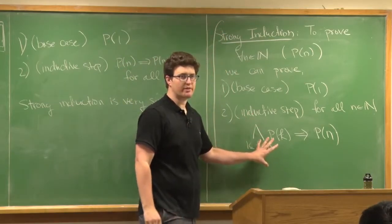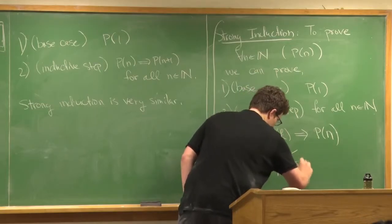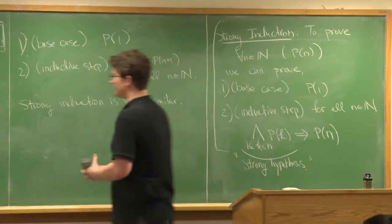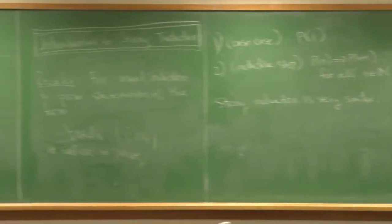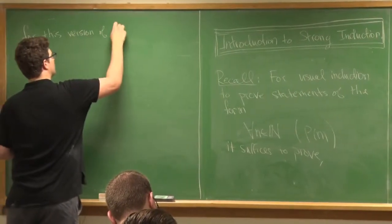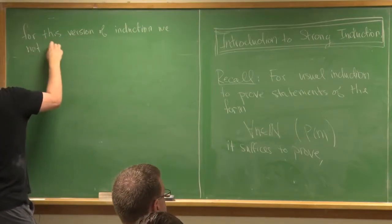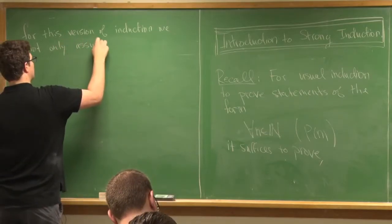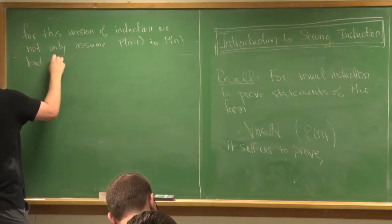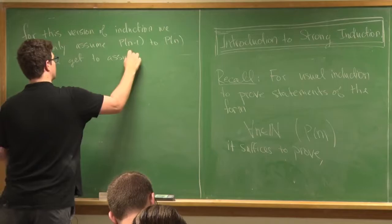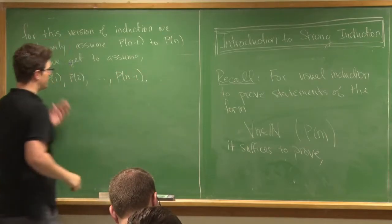So here we have a stronger hypothesis — this is the strong inductive hypothesis. The point is that we get to assume more in the inductive step. For this version of induction, we not only assume P of n minus 1 to prove P of n, but we get to assume P of 1, P of 2, all the way up to P of n minus 1. So we get to assume all of these things.